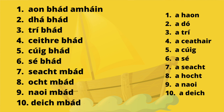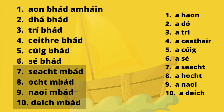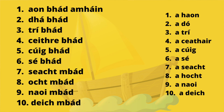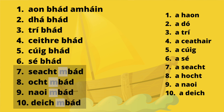Another thing you'll notice is that between the numbers one and six, the noun undergoes what you would call lenition — that's the addition of a 'h'. So it's aon bhád, dhá bhád. But between seven and ten, the word bád becomes eclipsed with the addition of an 'm'. The reason for that is because bád starts with a consonant 'b', and because the noun starts with a consonant it undergoes lenition between one and six, and eclipse between seven and ten.